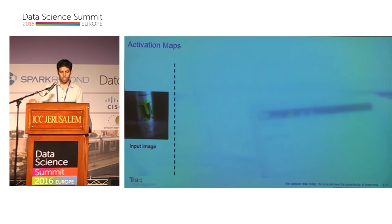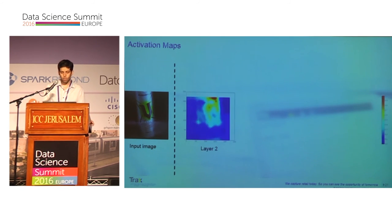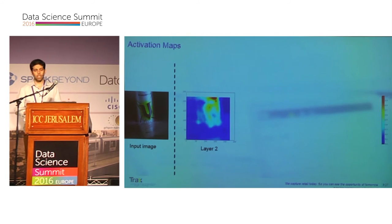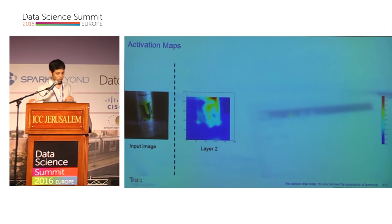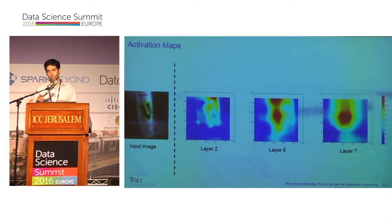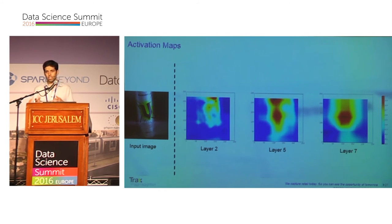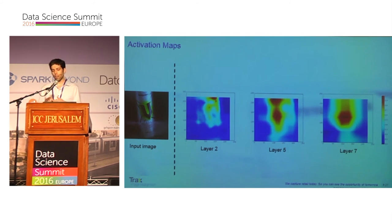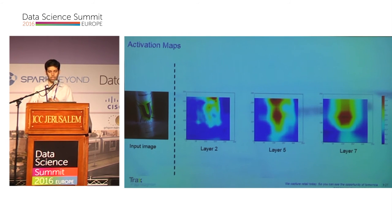In this case, the input image is an energy drink. At layer two, the most important parts are on the top of the image. Looking at deeper layers, at layer seven, the network found the V-slogan in the middle of the product as the most significant part.